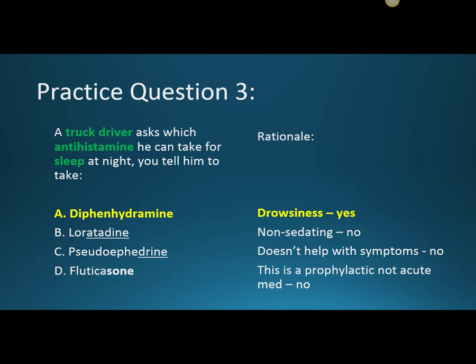Diphenhydramine is the active ingredient in Tylenol PM — the PM stands for nighttime. So diphenhydramine is now the correct answer. Pseudoephedrine not only doesn't help with the sleep symptoms, it would actually keep the patient up at night — the opposite effect. And fluticasone is a prophylactic steroid that wouldn't help someone trying to get to sleep.